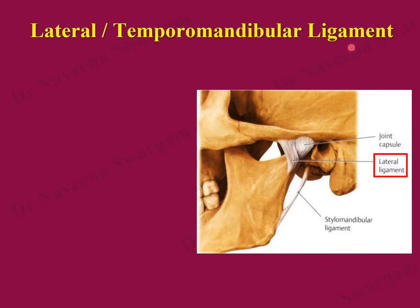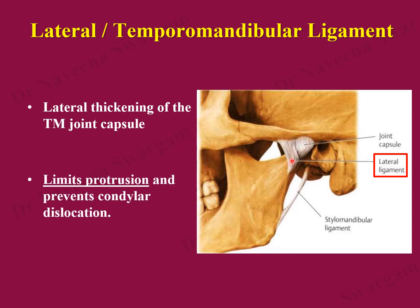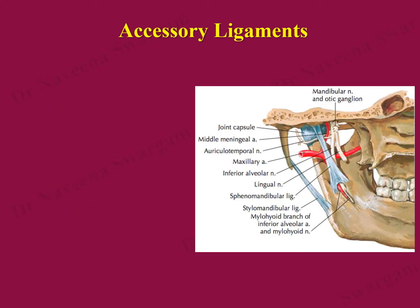The synovial membrane lines the two synovial cavities of the joint separately, excluding the articular surfaces. The lateral ligament, also known as the temporomandibular ligament, is the lateral thickening of the joint capsule. It is directed downwards and backwards from the tubercle on the root of the zygoma to the posterior margin of the neck of the mandible. It prevents condylar dislocation by restricting excessive forward movement or protrusion of the mandible.